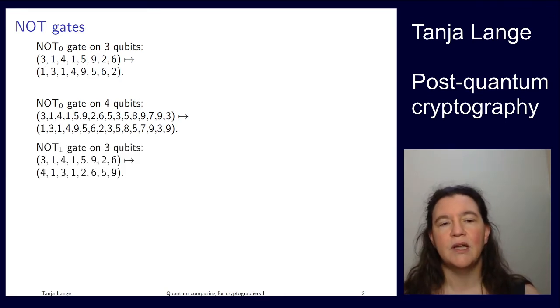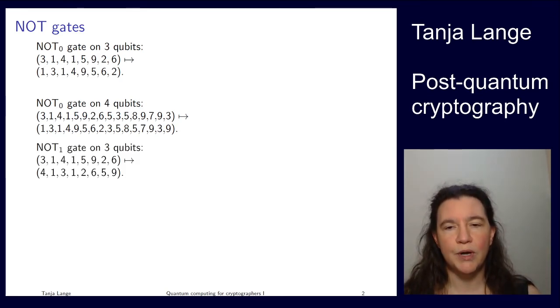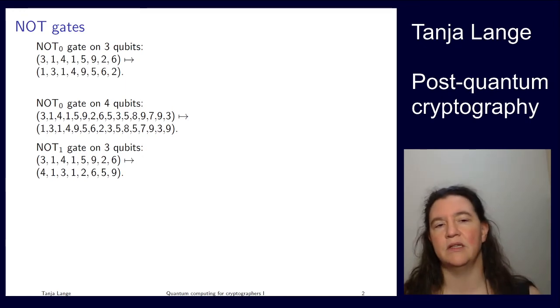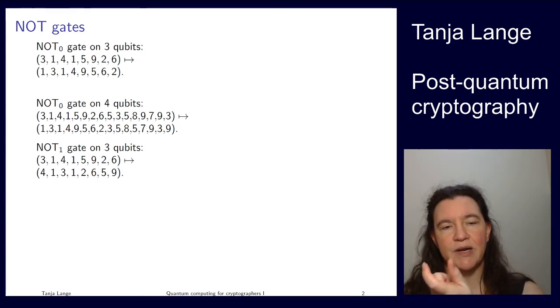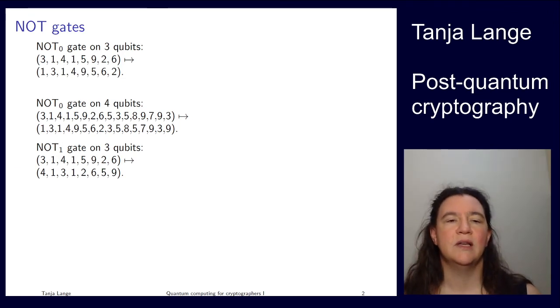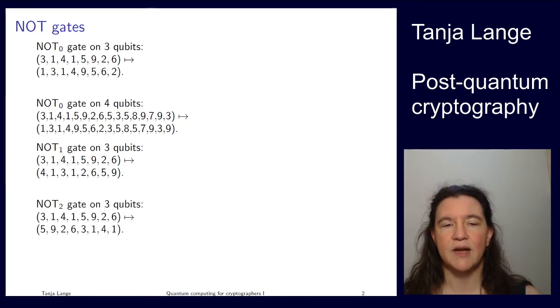We can also negate other qubits. Going back to 3 qubits, if we negate qubit 1, that turns 000 into 010, integer 2, so it doesn't swap adjacent pairs but swaps pairs with a gap of 1. It swaps the 3 with the 4, the 1 with the 1, the 5 with the 2, and the 9 with the 6. Finally you can do it on qubit 2, the most significant qubit. That one is doing gaps by 4, taking the bottom half and swapping with the top half.